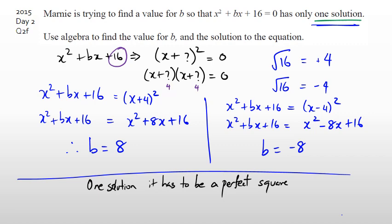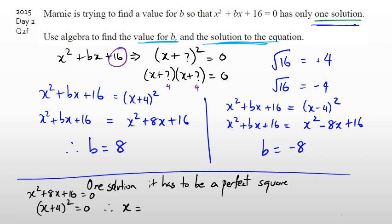In terms of grades: value of constant found and the equation solved. We also need to actually find the solution to the equation. For B equals 8: X squared plus 8X plus 16 equals 0 gives (X plus 4) squared equals 0, therefore X equals negative 4. That's one solution.